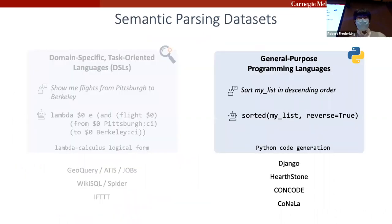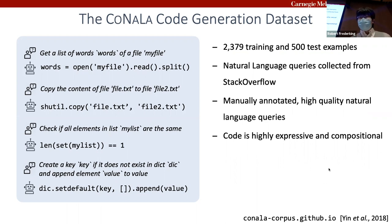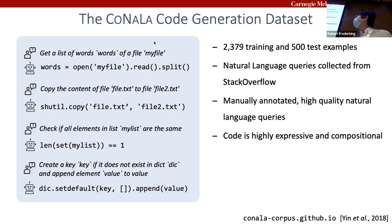On the more general side, we have the code generation setting. Conala is one such natural language code generation dataset, with examples created from Stack Overflow — popular questions that reflect real-world use cases of programmers, especially novice programmers, when they are coding. Although not an extremely huge dataset, it is quite challenging; even for a very strong system it still fails, and we have very low exact-match accuracy for the output program.